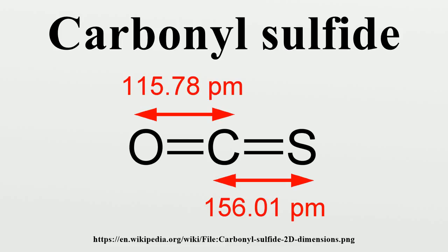Carbonyl sulfide is present in foodstuffs such as cheese and prepared vegetables of the cabbage family. Traces of COS are naturally present in grains and seeds in the range of 0.05 to 0.1 mg per kg.